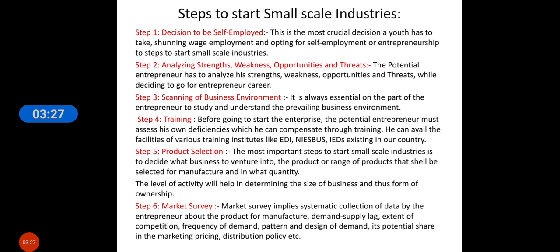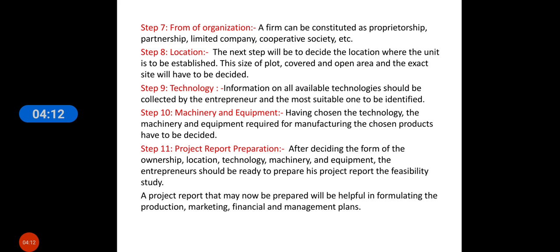After selecting the product and level of activity, you conduct a market survey. A market survey generally implies a systematic collection of data about the product for manufacture — demand, supply, extent of competition, frequency of demand, pattern and design of demand, potential market share, pricing, distribution policy, etc. Everything will help you analyze market trends and decide the level and frequency of your production.